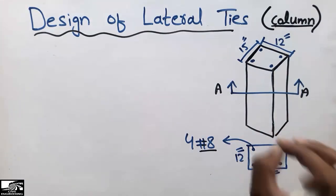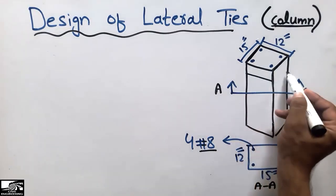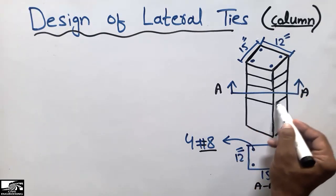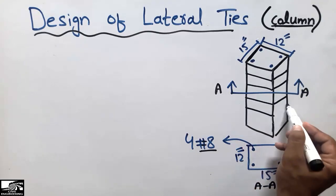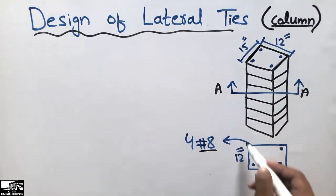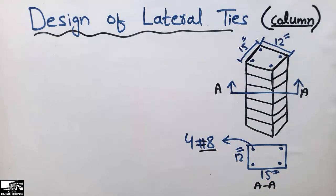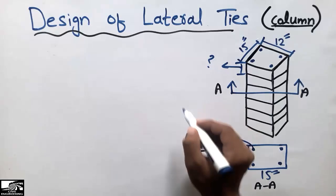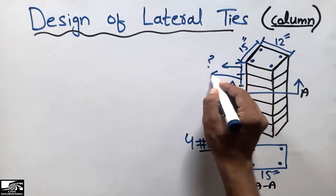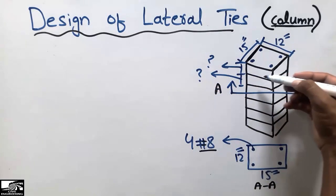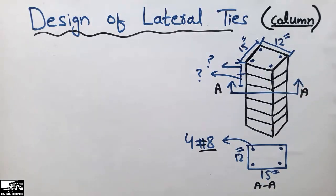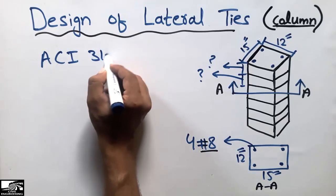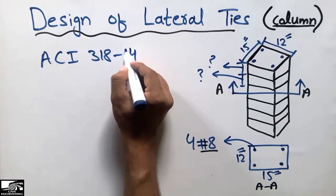We are interested in finding the lateral ties for the column — specifically, how much spacing should be provided between each lateral tie. We want to find this spacing distance for the lateral ties. According to the American Concrete Institute ACI 318-14 code, there are three formulas used for designing lateral ties.